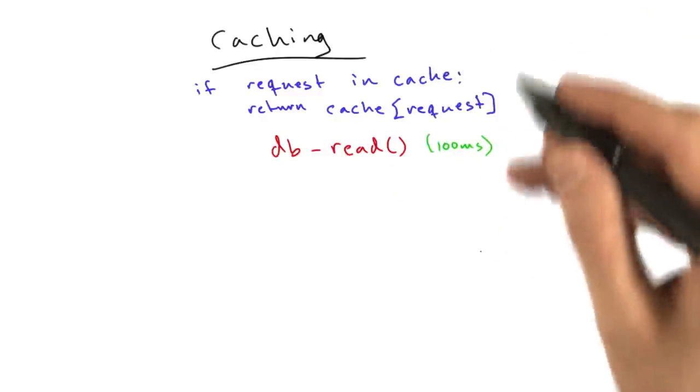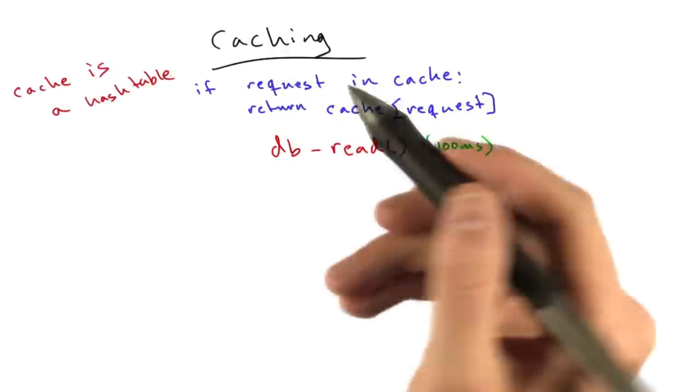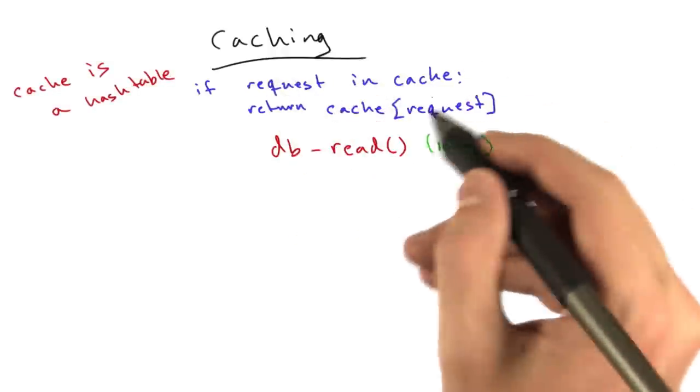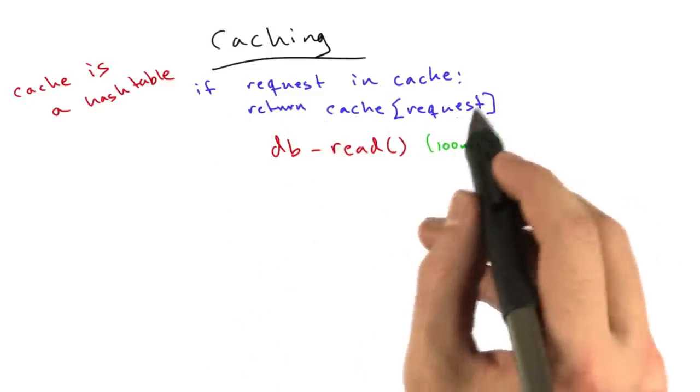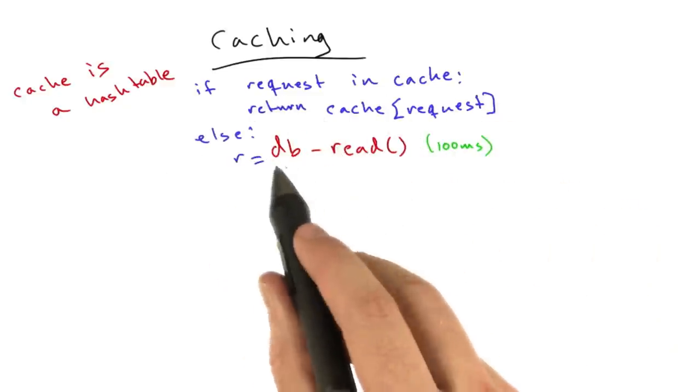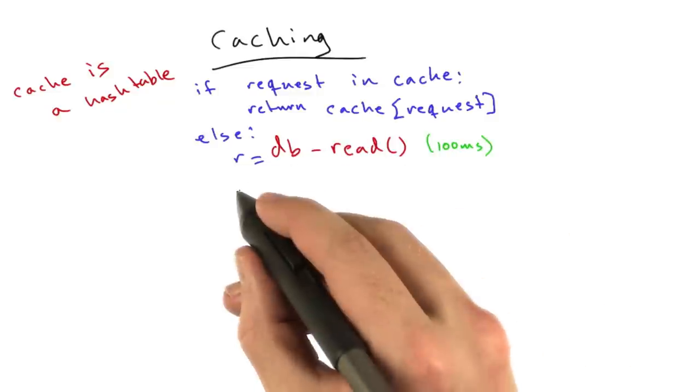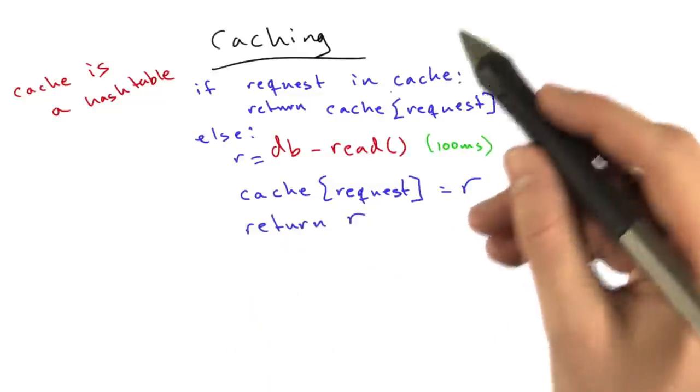And that's generally the structure of a cache. A cache is basically like a large hash table, a large mapping of keys to values. You know all about hash tables. A hash table works perfectly well for this. So, if our request is in the cache, return the cache value of that request. Else, store the value of this db_read in a variable, put that variable in the cache for future lookups, and then return that variable.